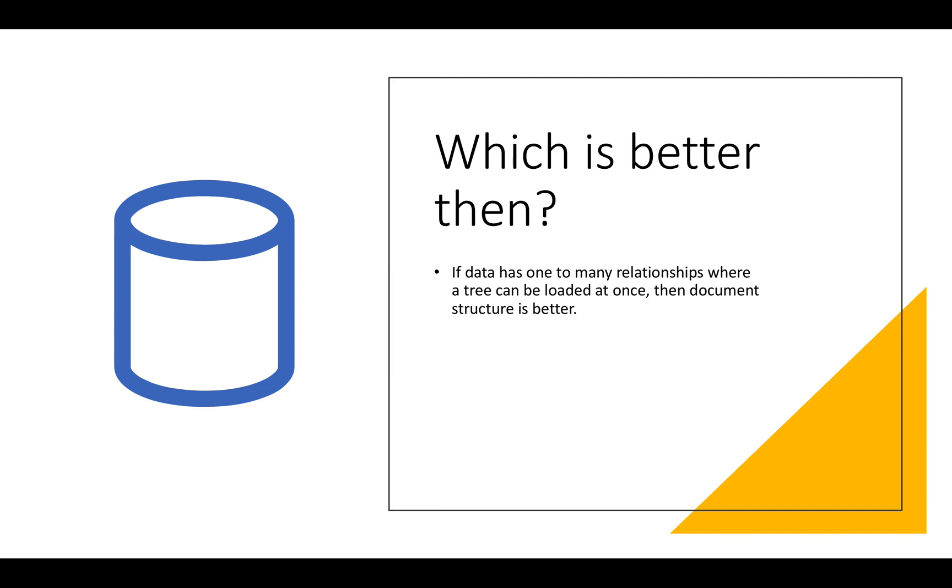Let us take some examples where we can find out which can be better in various cases. If our data has one-to-many relationships where a tree can be loaded at once, then the document structure is better. Let's take an example where a resume can be stored in a NoSQL database because resume generally has to be shown at a single time where all the details like education and work experience has to be appeared on the website at once. So in that case document structure can be better.